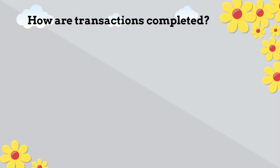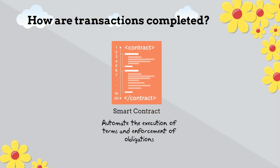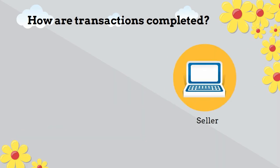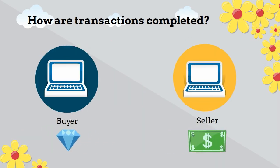How do transactions happen? Smart contracts are codes programmed into the ledger, which automate the execution of terms and the enforcement of obligations, such as payment and movement of assets. It replaces a traditional purchase and sell agreement. The data exchange itself is a settlement, eliminating bilateral errors made by participants in the transaction.